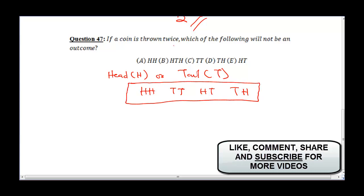Head-Head is a valid outcome. But if one of the options shows three outcomes listed, that is the wrong answer, because the coin was thrown only two times. So the one that will not be an outcome is option B — that is the correct answer. Tail-Tail, Tail-Head, and Head-Tail are all valid outcomes. The one showing three results is wrong.